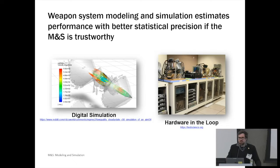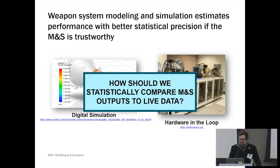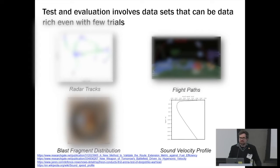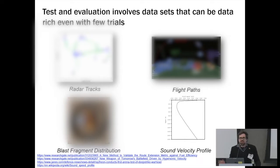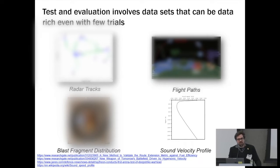In order to use an M&S tool, we need to know it is trustworthy — whether it be a digital simulation living entirely inside a computer or something like a hardware-in-the-loop simulation. The question is how we're going to make statistical comparisons of M&S outputs to real-world live data. The data sets I'm talking about are ones where there may not be a lot of trials, but any single trial may potentially be information-rich. Examples include flight paths — where an object flies through the atmosphere, space, or ocean — and radar tracks, where we have the position of a moving object over time. We may not have many tracks, but with any individual track we'll have a lot of information.